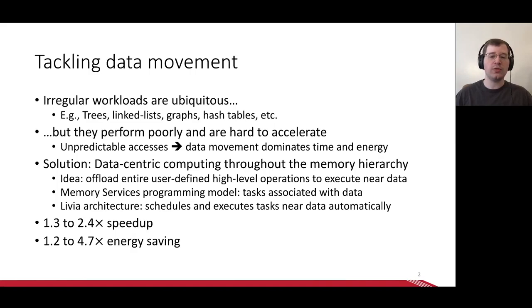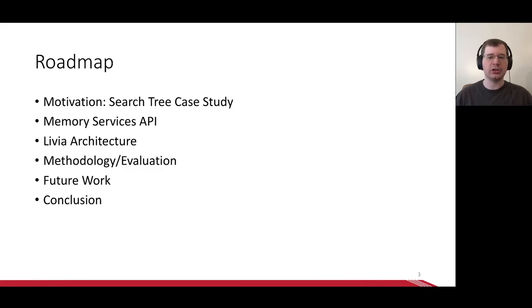Together this gives a speedup of up to 2.4 times and energy savings of up to 4.7 times over a traditional CPU. We'll start with a case study of a typical irregular application to understand the issues at play and how we address them. Then we'll look at the memory services API and the Livia architecture. We'll evaluate Livia and finish with some future work.